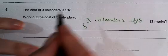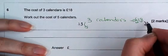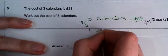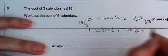So we can do this by dividing 3 by 3 and dividing the 18 by 3. We're going to have one calendar cost 6 pounds.